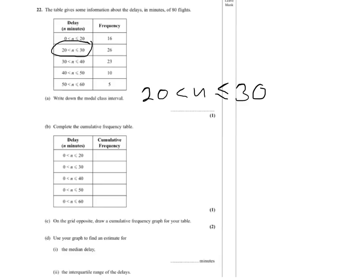Now for cumulative frequency, it always starts the same as the frequency: 16. We then need to add the 16 and 26 to get 42. We then need to add the 16, 26 to the 23, and that's 65.